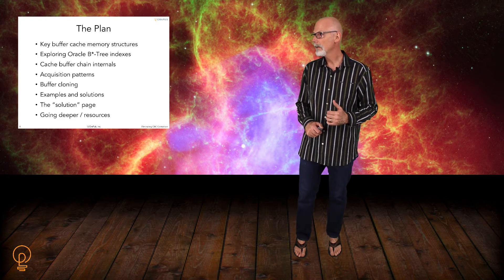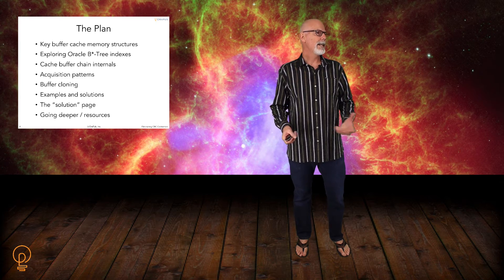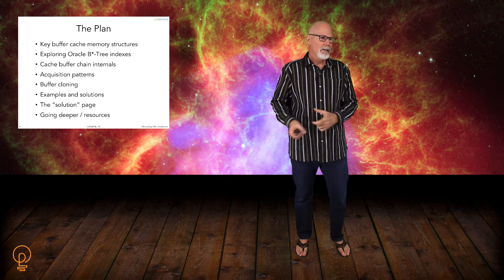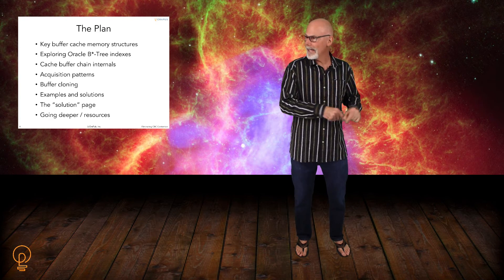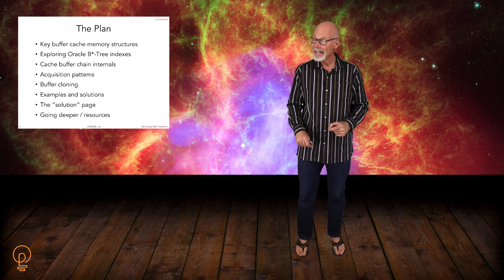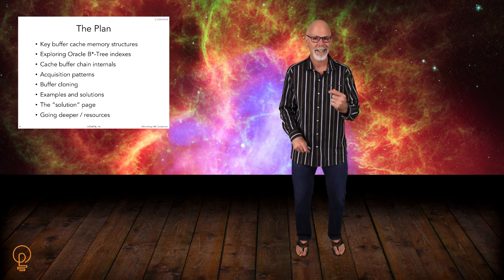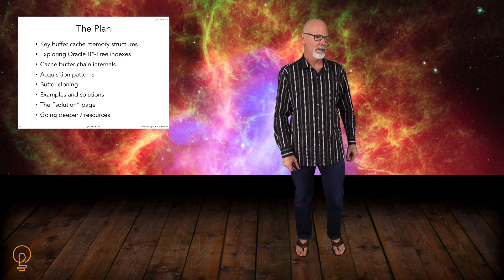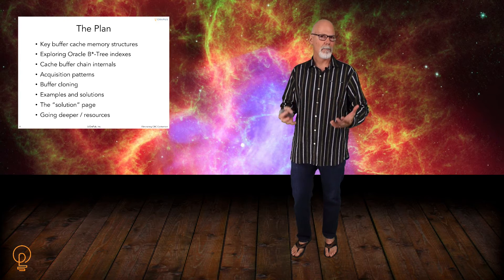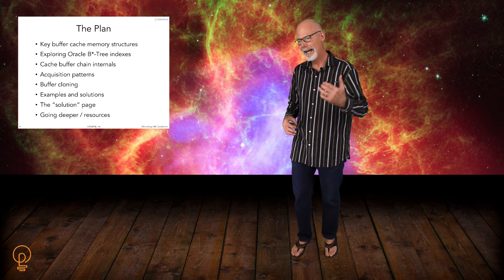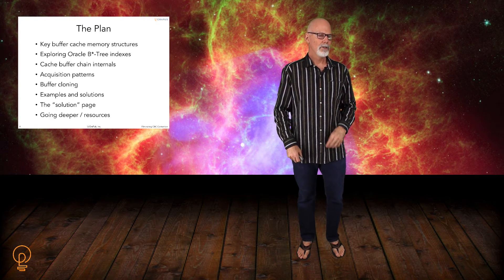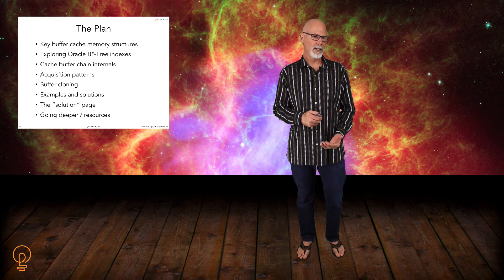Then we've got to talk about buffer cloning. Essentially what buffer cloning is: I have the current mode buffer, I need to make a copy of that to make a consistent read copy, so I can see what that block looked like back in time. The problem with that is if there's a lot of that going on with the same buffer, that can actually manifest and we see that as cache buffer chain latch contention. So we're going to delve into that. And then I'm going to show you a couple of examples and solutions for cache buffer chain latch contention and the actual implementation of those.